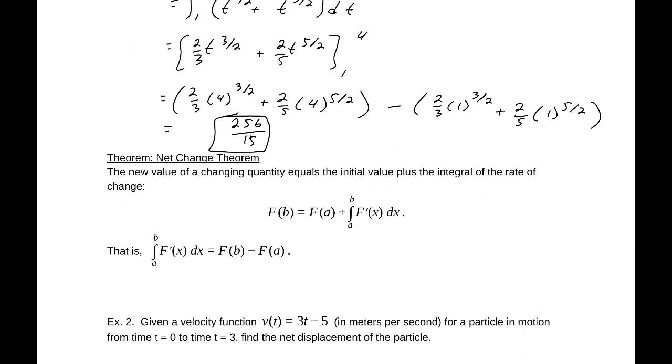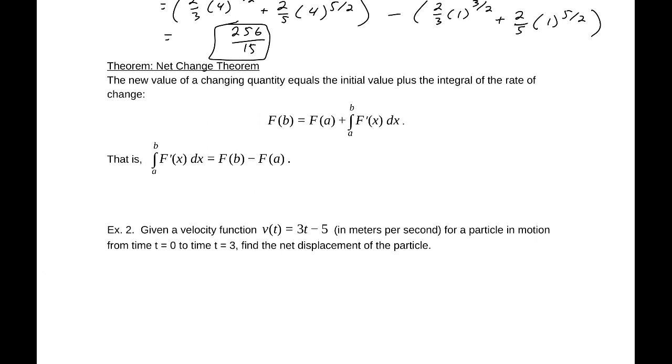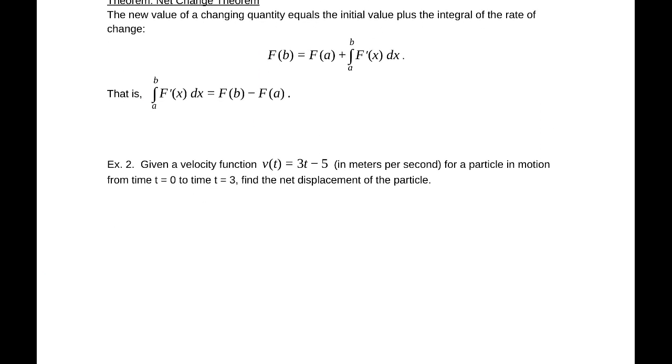Now let's apply this. Effectively what a lot of these are going to be is just applications of that. Given a velocity function v(t) equals 3t minus 5 in meters per second for a particle in motion from time t equals 0 to time t equals 3, find the net displacement.